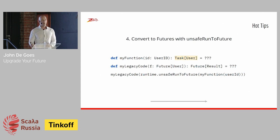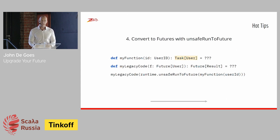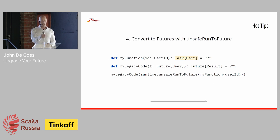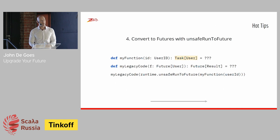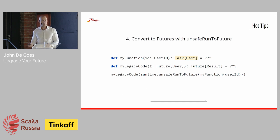There will be some points where you need to go the other way — you've converted code to Task but something expects a Future. You can do that with unsafeRunToFuture, but you can't do it lazily since Future is not lazy. Any time you convert from a ZIO Task into a Future, it will kickstart that computation at the conversion point. All the benefits of ZIO stop at that edge — futures can't be canceled, and so forth. So you want to defer that conversion as long as possible.